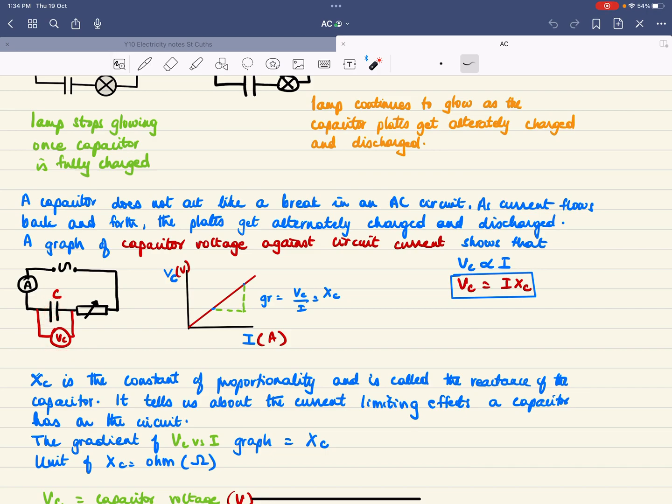This rheostat or variable resistor is there to change the size of the current. As you move the slider of the rheostat, you get different currents and then you measure the voltage for these different currents.